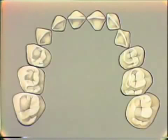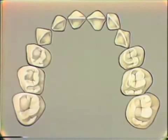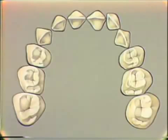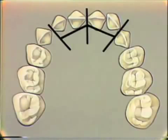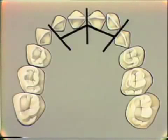The next step is to determine the amount of space needed for the alignment of the lower incisors. When lower incisors are crowded, as on the right side, they will occupy more space when aligned than they do clinically now. And as seen on the left, if the teeth are spaced, they will occupy less space when aligned.